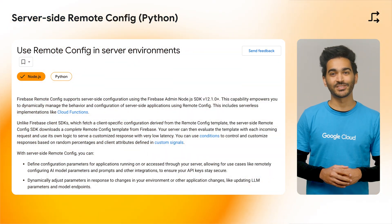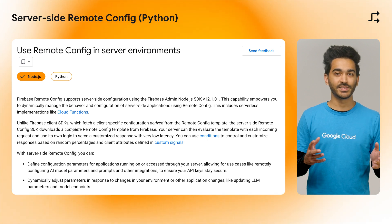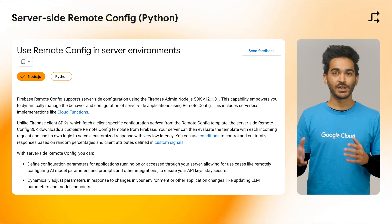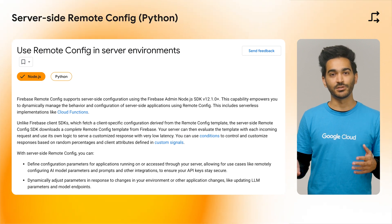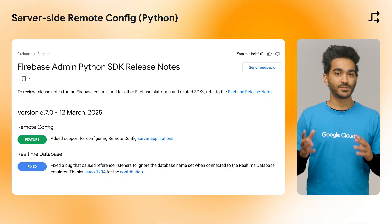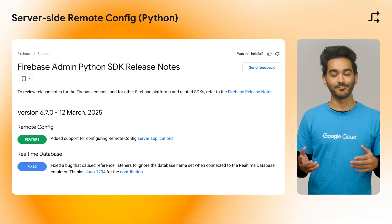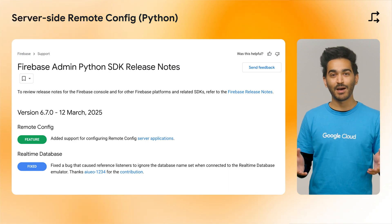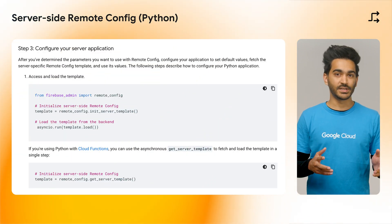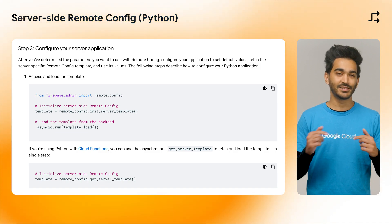A few months ago, we announced that you can now use Firebase Remote Config on the server side through the Admin SDK for Node.js — a feature that empowers you to dynamically manage the behavior and configuration of server-side applications. With the release of version 6.7.0 of the Firebase Admin SDK for Python, you can now also use this feature in apps built with Python. Check out the Remote Config server-side documentation linked in the description to learn more.